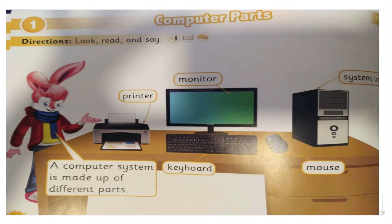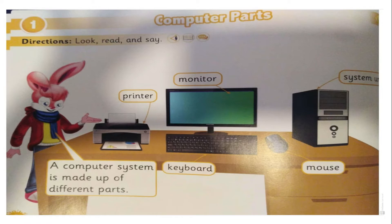What are these? A computer system is made up of different parts. Look — this is the monitor, the screen, we call it monitor. And this part is the keyboard. And this part we call it printer.